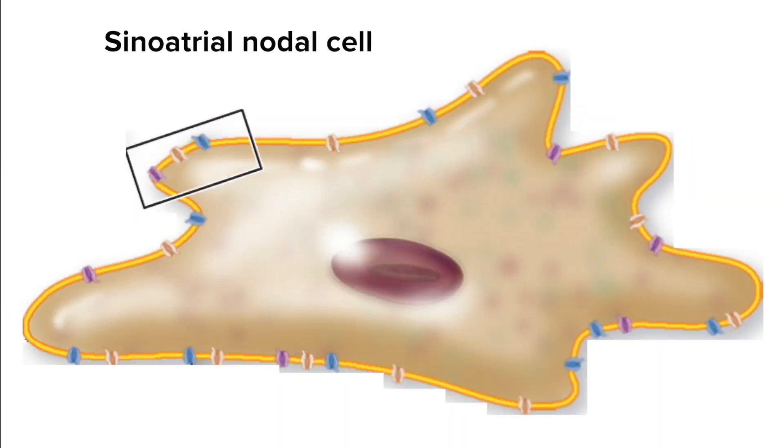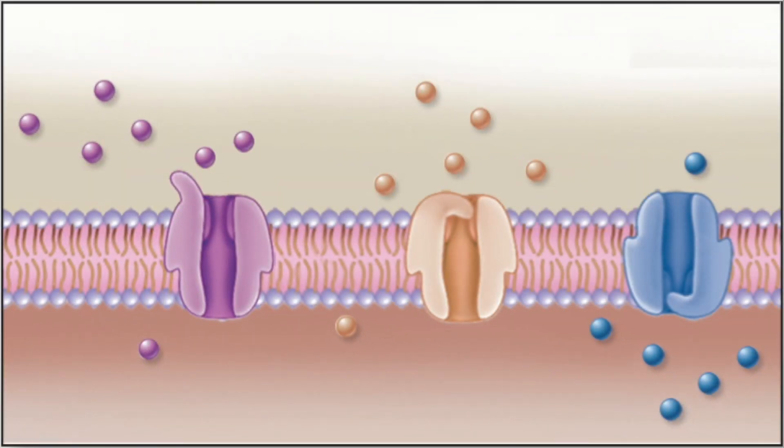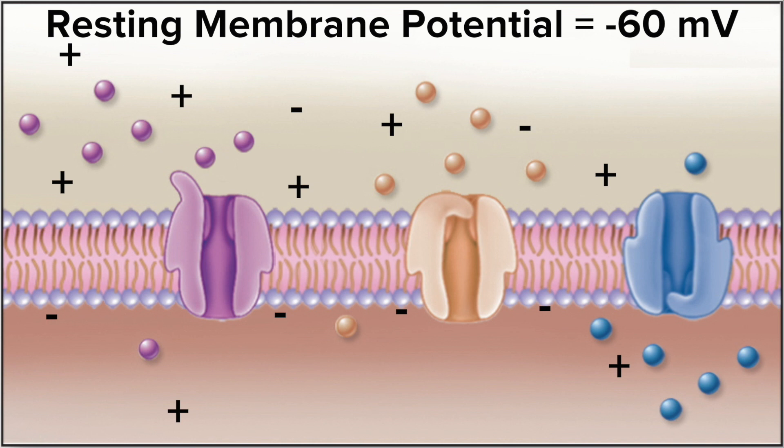These cells have a plasma membrane, just like any other animal cell. And they also have a membrane potential due to the difference in ions inside and outside of the cell. The resting membrane potential in these nodal cells is minus 60 millivolts. But it's not all that stable of a resting membrane potential.